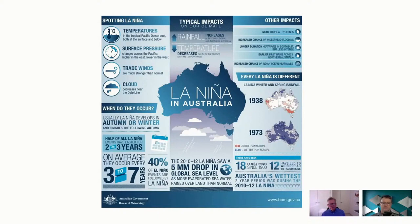1973 was probably our wettest La Niña — you can see from the infographic how wet it was across virtually the whole continent. The 1938 La Niña was quite a dry one, probably because of other drivers like the Indian Ocean Dipole, which they didn't even know about in 1938 — it's a relatively new area of science. In 1973 the wet season started very early in the north, in some areas as early as September, running through into 1974 and culminating in the Brisbane floods. A La Niña means a much longer, earlier wet season — the monsoon coming in early December rather than early January.